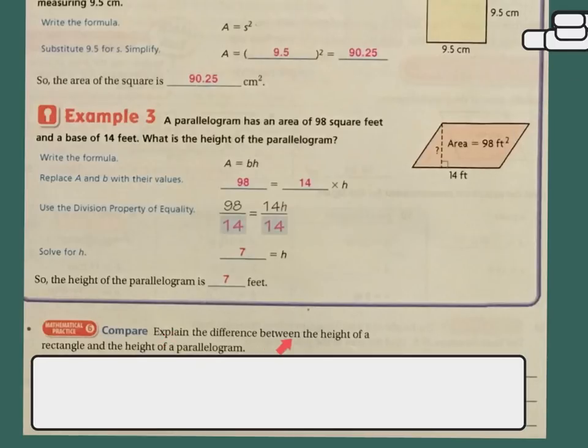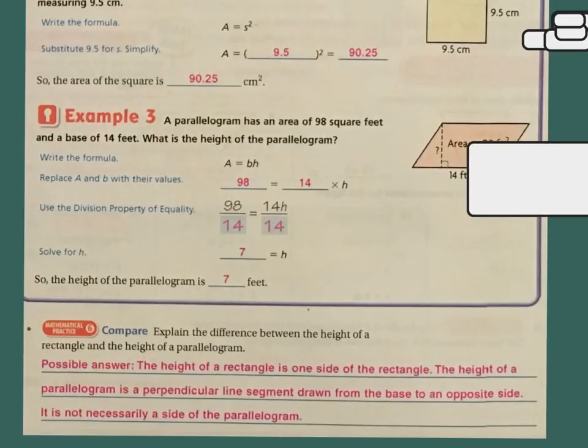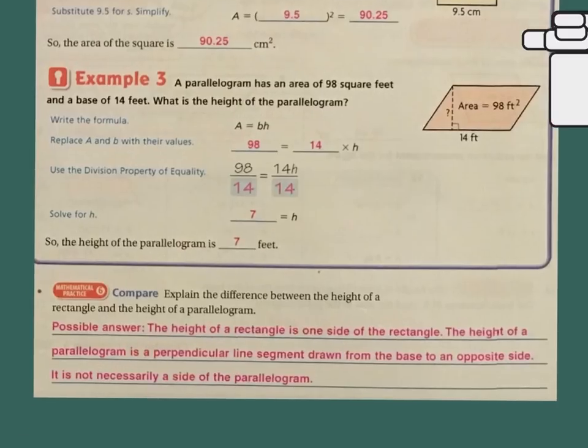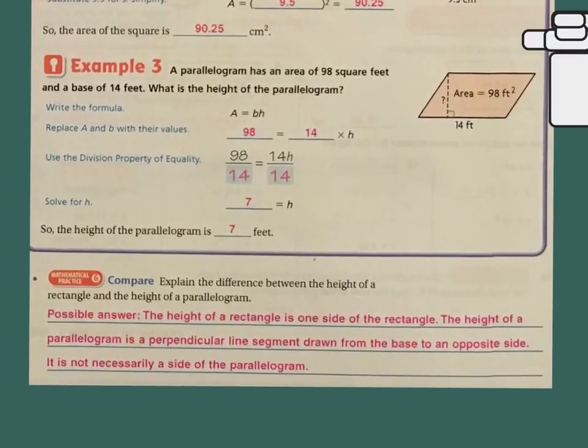It says, explain the difference between the height of a rectangle and the height of a parallelogram. Well, the height of a rectangle is one side of a rectangle. The height of a parallelogram is the perpendicular line segment drawn at the base to the opposite side, and it is not necessarily the side of the parallelogram. So it's the highest height it is here, but that's because this little triangle right here, like if I drew the height here, it would be different. I have to draw the height here at the very end where the marker ends because this triangle essentially fits here, making my perfect rectangle.